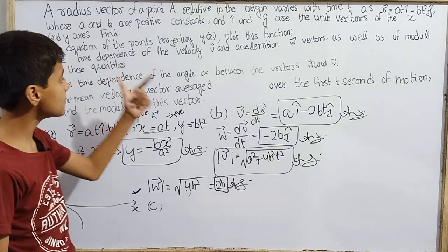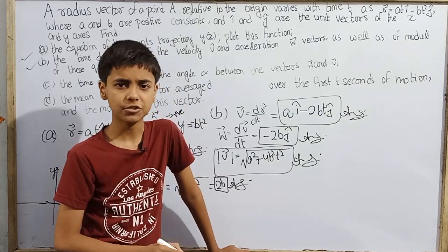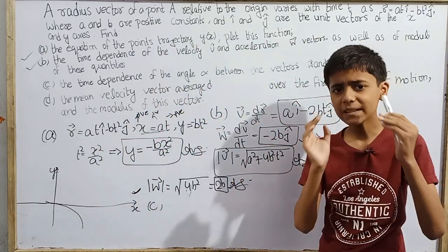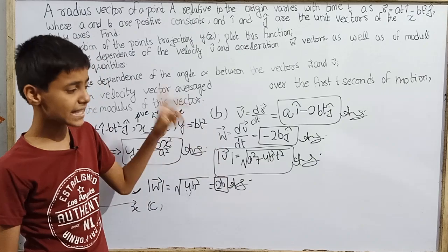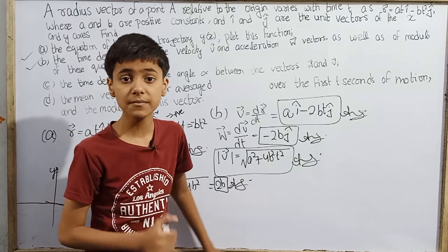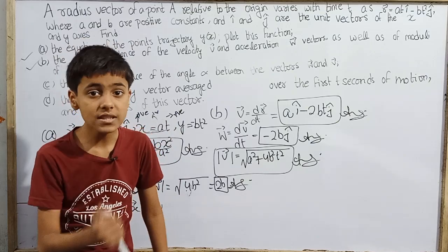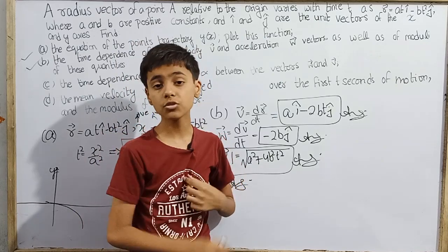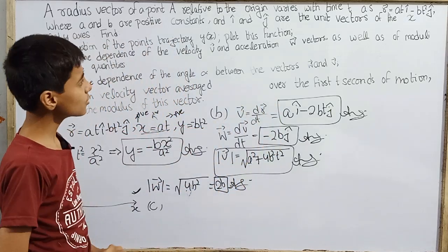For part (c), we need the time dependence of the angle alpha between vectors w and v. This can be a little tricky. The textbook answer is given in terms of tan alpha. However, we can also approach it using cos alpha and arrive at an equivalent answer.